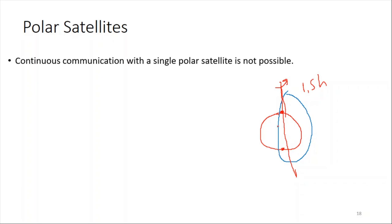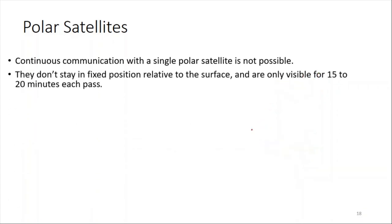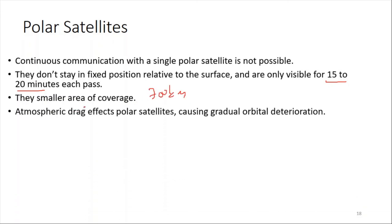However, if you want to send signals to only one particular area, as the earth moves, that point eventually moves away and the satellite cannot reach it. That is why many satellites are needed for continuous communication using polar satellites. They do not have a fixed position relative to the earth's surface, are only visible for about 15 to 20 minutes per pass, and have a small coverage area because they are only about 700 kilometers above the surface.